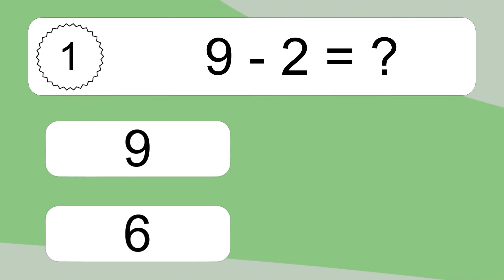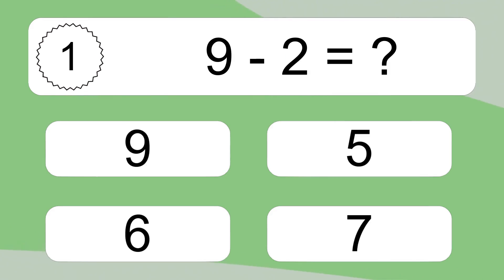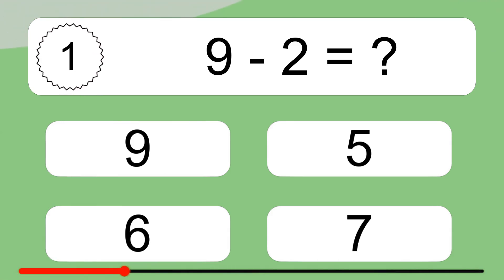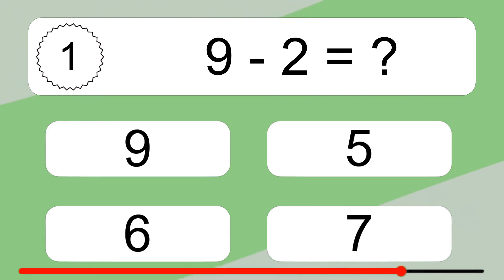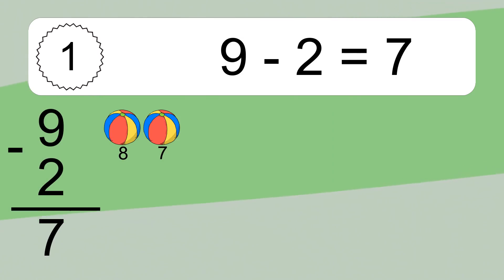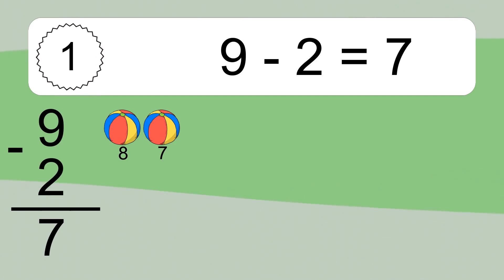9 minus 2 equals what? 9 minus 2 equals 7. Let's count it: 8, 7.